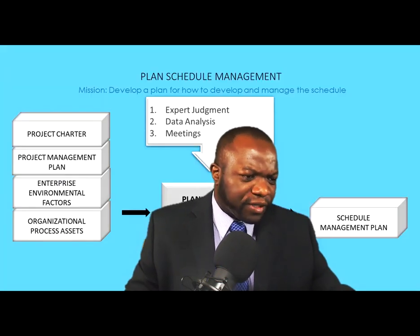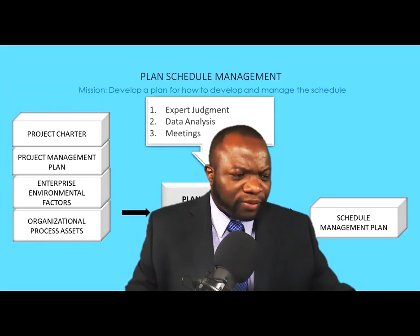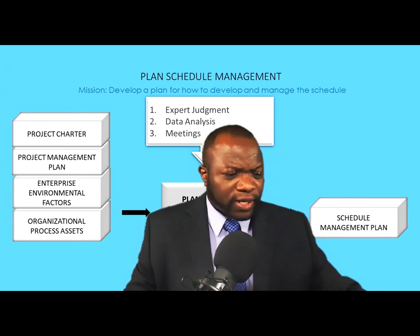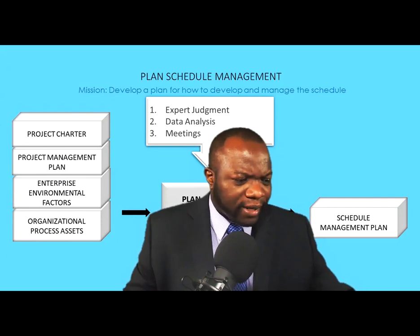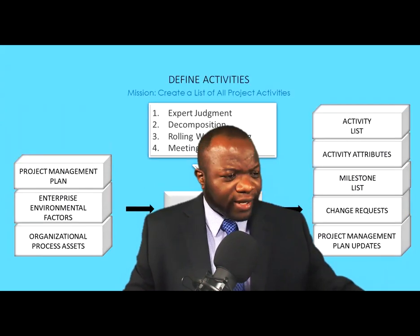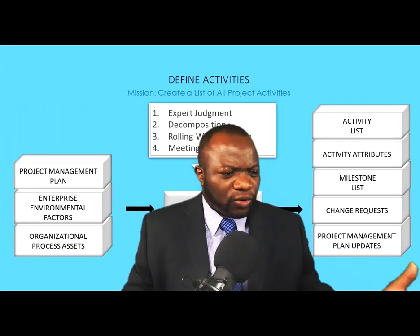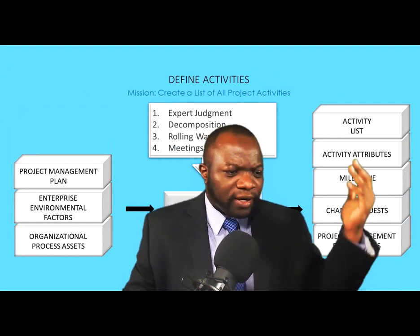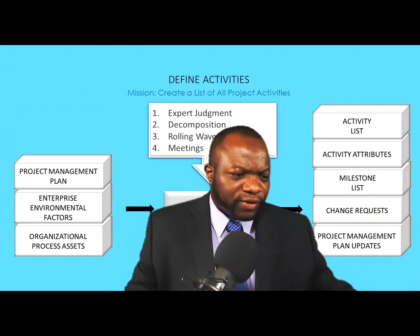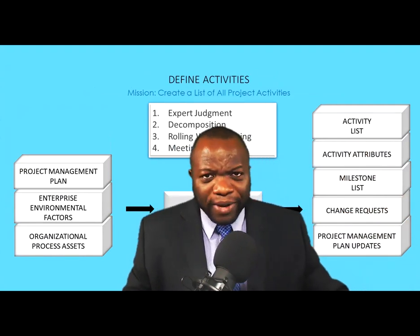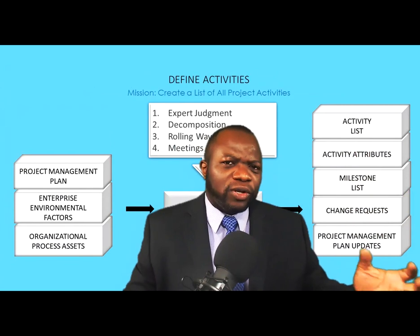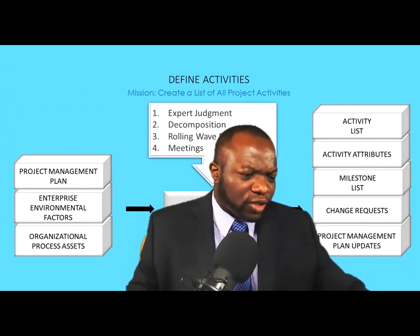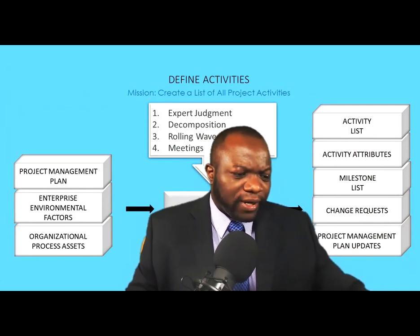Just to give you a quick top of the waves — you've got plan schedule management, we're going to be talking about the schedule management plan. After that, you define the activities. Your major output is your activity list, your activity attributes, and your milestone list.